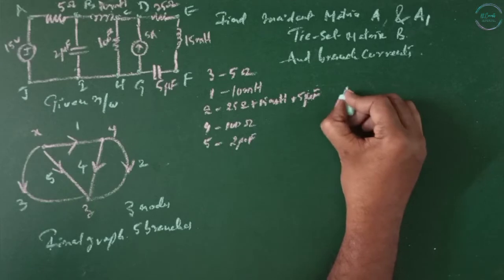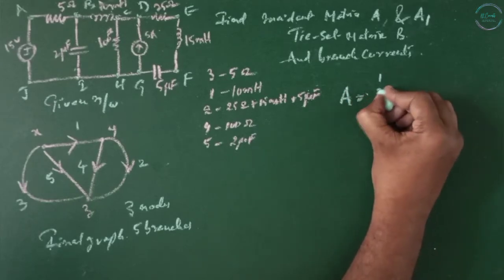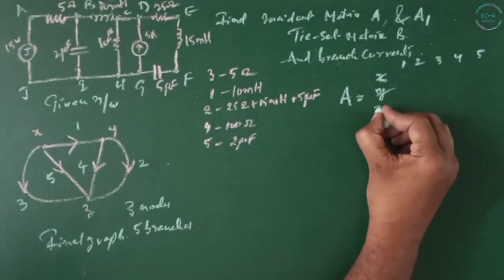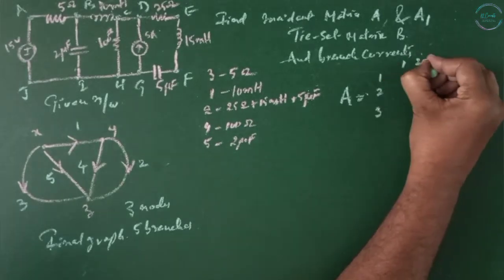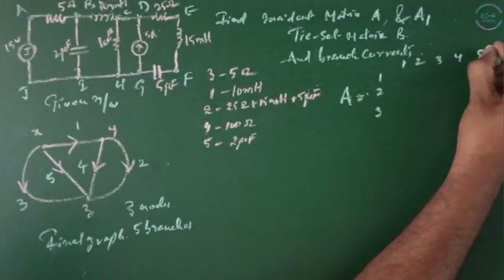The incident matrix A is given by the nodes X, Y and Z against elements 1, 2, 3, 4, 5.